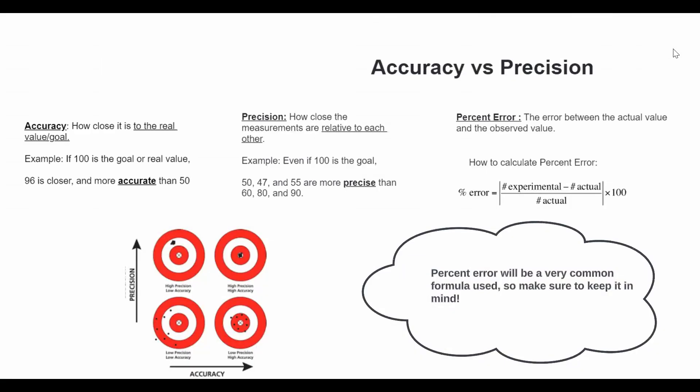So let's talk about accuracy and precision. Accuracy is how close it is to the real value or goal. For example, if 100 is the goal or real value, 96 is closer and more accurate than 50.